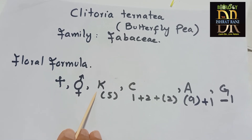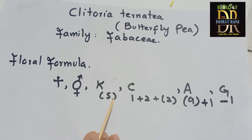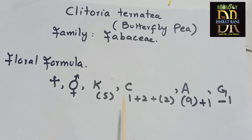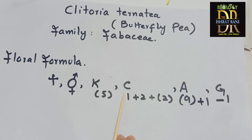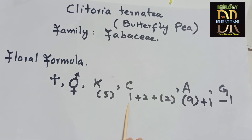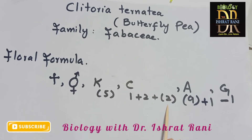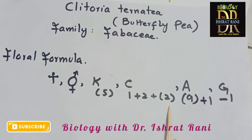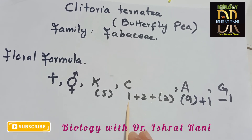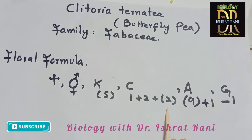All the sepals were fused — this is gamosepalous, represented with the appropriate symbol. Five fused sepals are present. For the corolla: one petal was large — the vexillum or standard. Two petals were equal in size — these are the wings. Two lower petals were fused — these are the keel or carina. The arrangement is 1+2+(2).